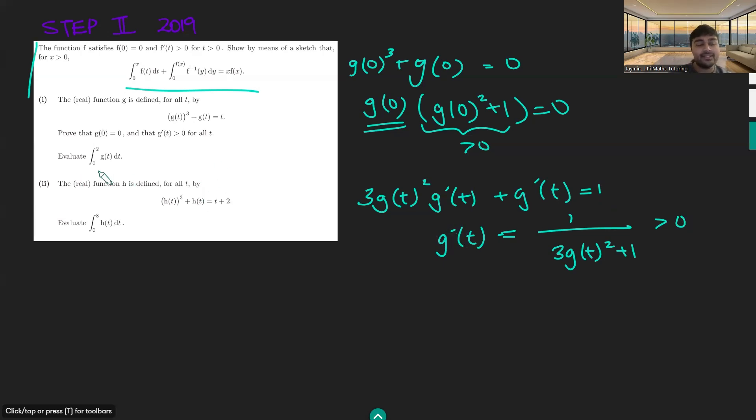So now we want to evaluate the integral from 0 to 2 of g(t) dt. Well, we're just going to use this result from part zero. We're going to replace f with g. And the few things we need to know is what's the inverse of g and what's our x value going to be? Well, our x value is going to be 2.